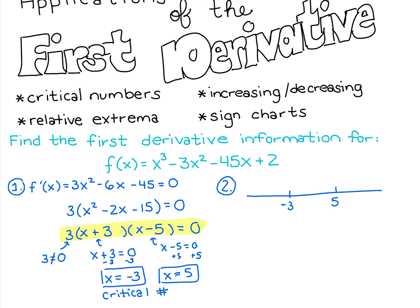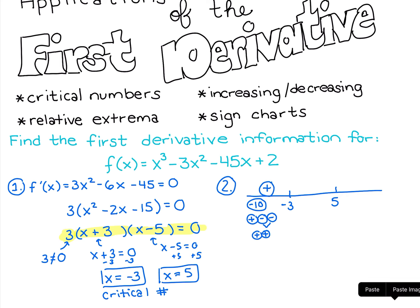I'll test a number before -3, like -10. The first factor, 3, is positive. Then -10 + 3 is still negative. And -10 - 5 is also negative. So we get positive × negative × negative — two negatives make a positive. This entire interval is positive, meaning the function is increasing before the critical number at -3.